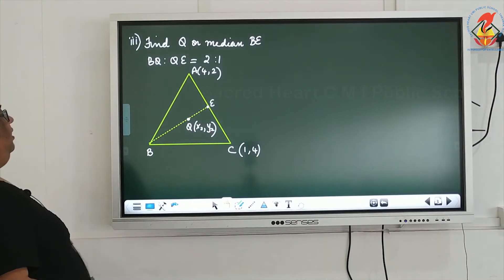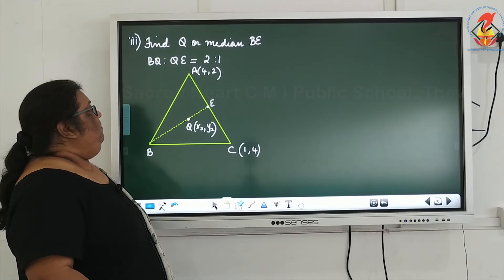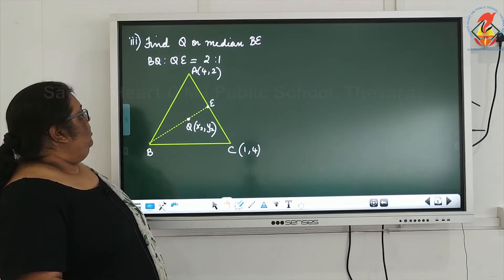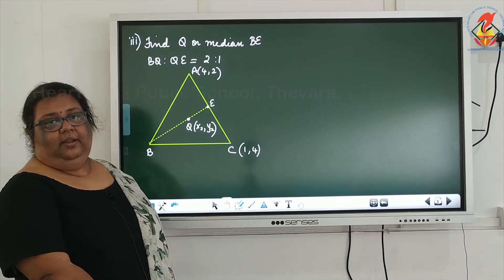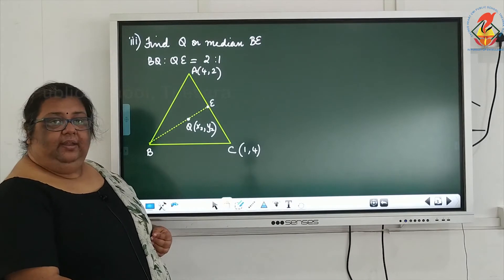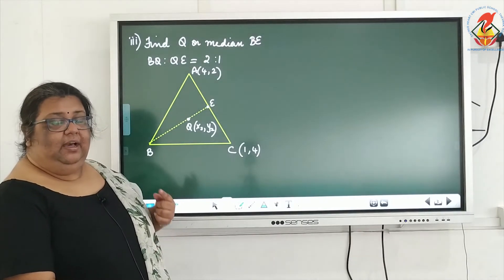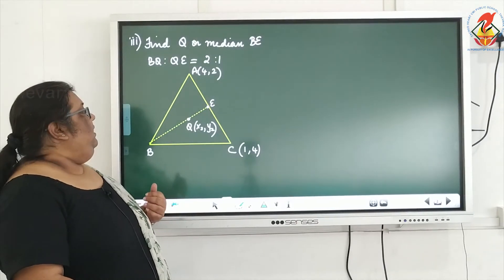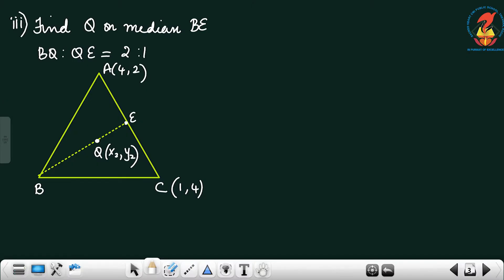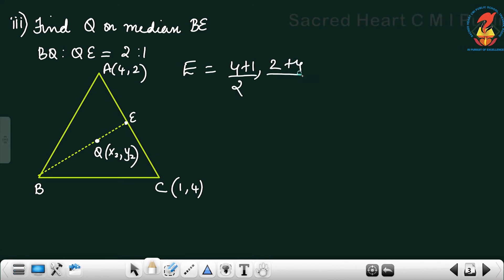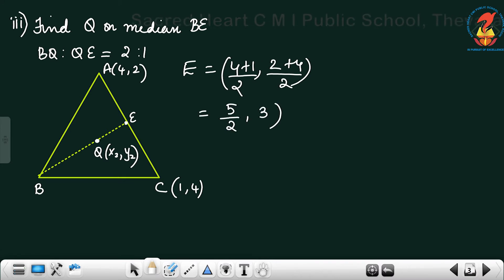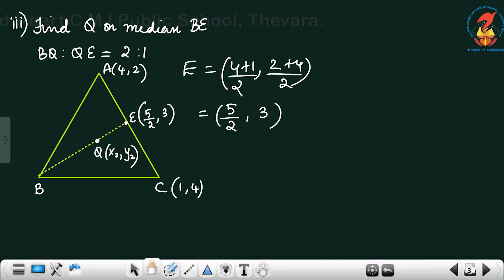Third subdivision: find Q on the median BE such that BQ to QE is equal to 2 to 1. BE is the median. If BE is the median, E is the midpoint of AC. So we will find E first. E is equal to (4 plus 1 by 2, 2 plus 4 by 2), which is equal to (5/2, 3). So the coordinate of E is (5/2, 3).